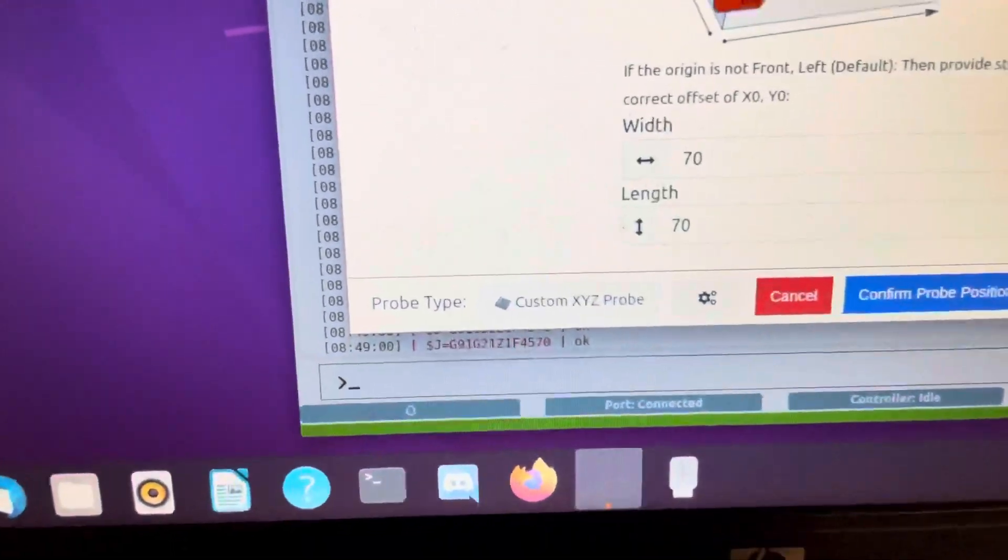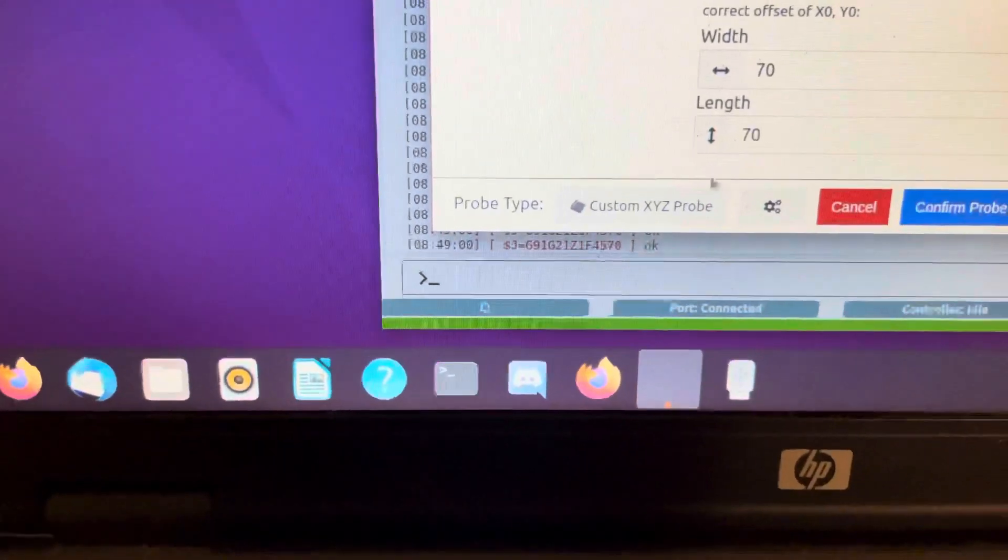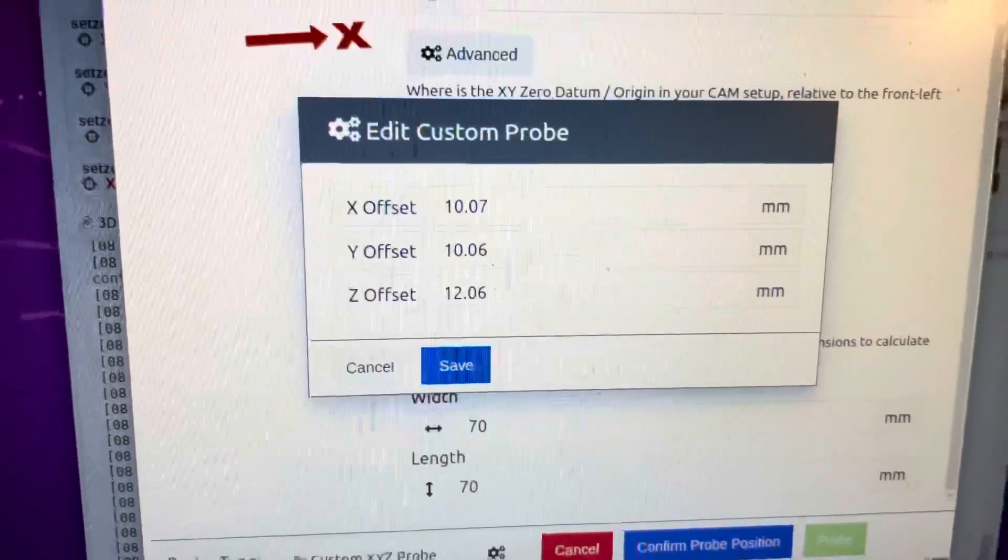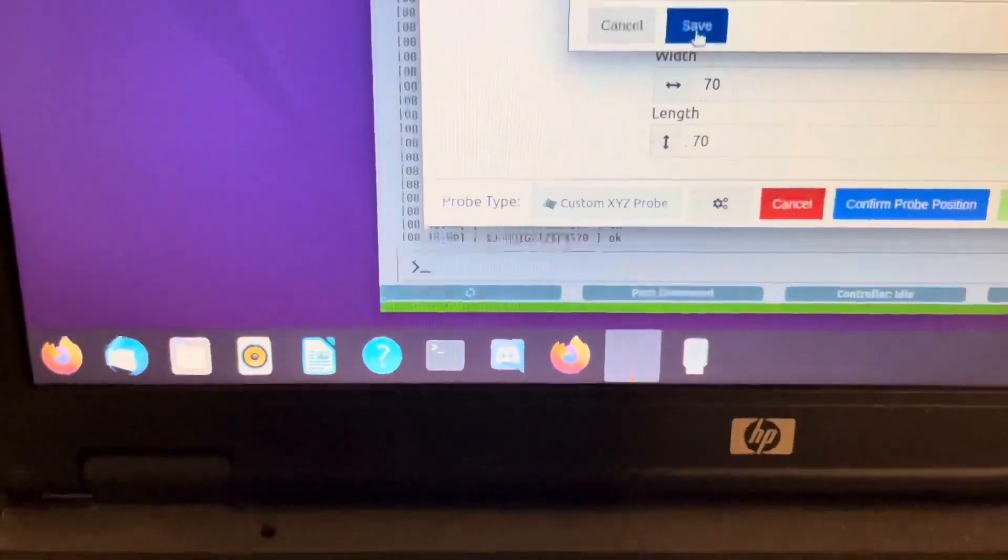My plate is different. I changed it to 70 by 70. Then on Custom, I averaged out multiple measurements for the X, Y, and Z. I'm going to click Save.